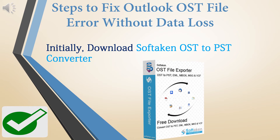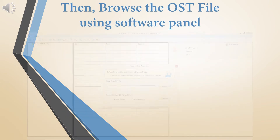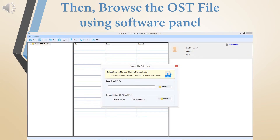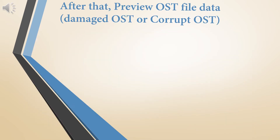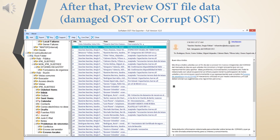To fix an Outlook OST file error without data loss, first download the Softaken OST to PST Converter. Then browse the OST file using the software panel, as shown. After that, preview the OST file data — including damaged or corrupt OST files.